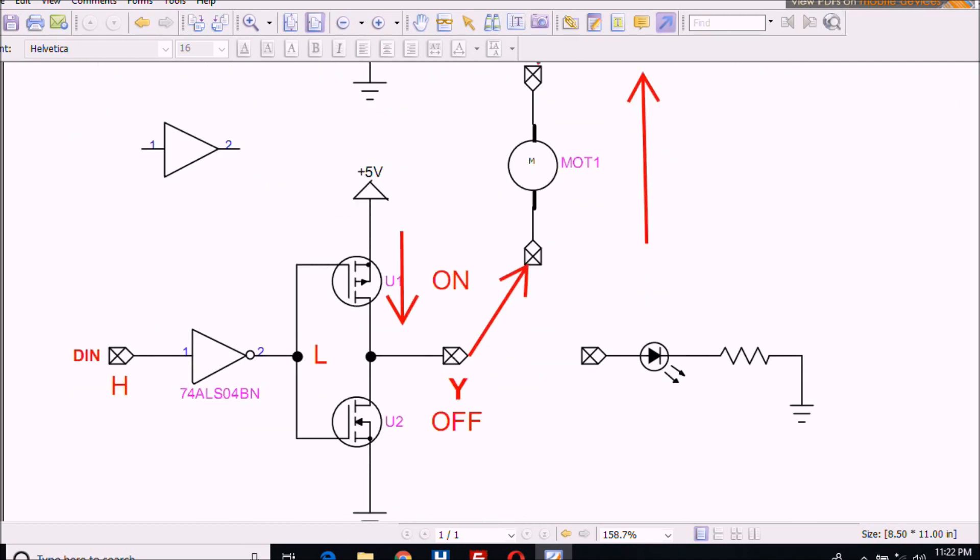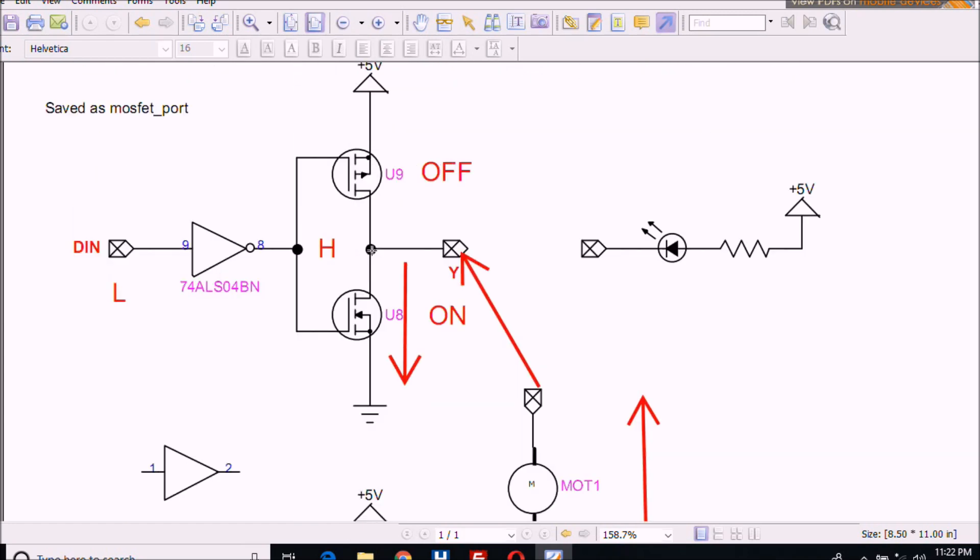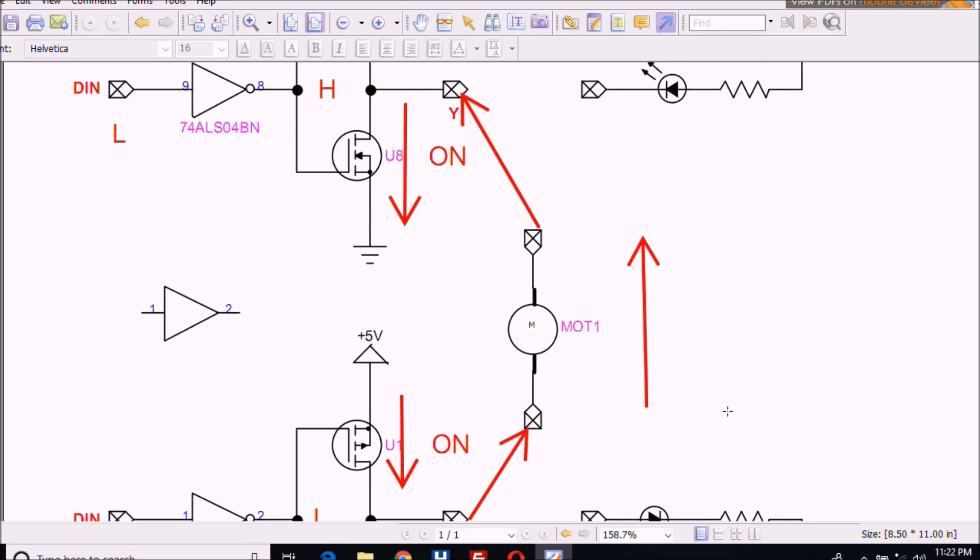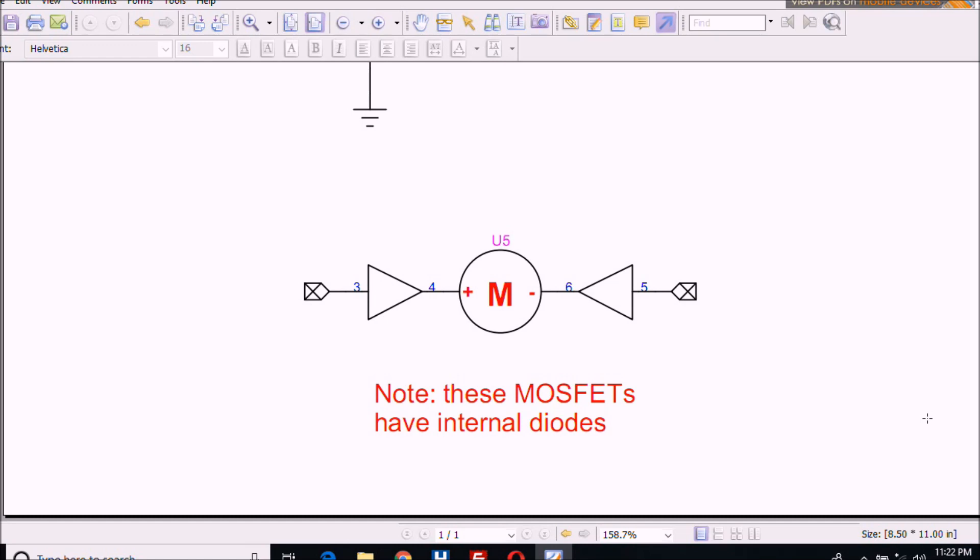With a low in, it creates a path to ground. The current flow on the motor is going to flow through U1, through the motor, back to U8 to ground. If I change this one to high and change this to low, I would reverse my current flow. So these two inputs will form essentially an H-bridge.